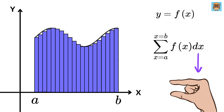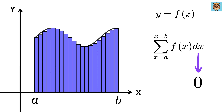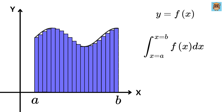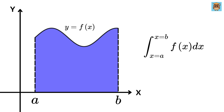When dx is very small — not zero, but approaching zero — we simply change this summation sign with the integral sign. When we put the bounds from x equals a to b, we call it a definite integral. So the area of this curve is given by the definite integral from a to b of f of x times dx.